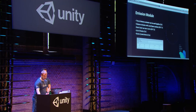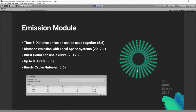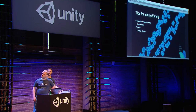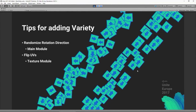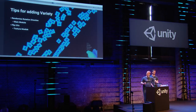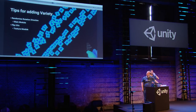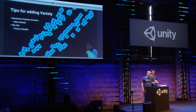This allows some interesting effects — for example, eight cycles quite quickly followed by slower ones. Distance-based emission now works in local space, not just world space, as we now record velocity information. We've also added a randomized rotation direction — a value between zero and one representing the chance of going the other direction — so you can add variety. And there's a 'flip UVs' option in the texture module.